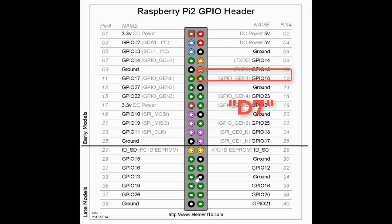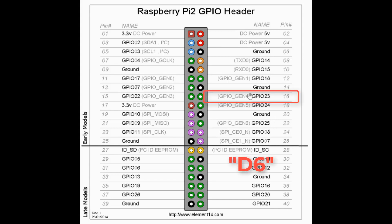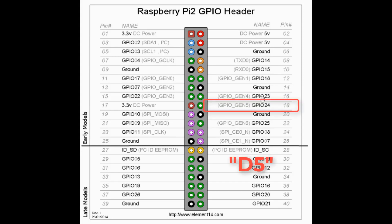Then pin number 14, which is LCD D7, we connect it to GPIO8. If you are looking for it, just count the pins — one, two, three, four, five, six — so GPIO is for LCD_D7. Then LCD_D6 is pin number 23, which is GPIO23, connected to pin number 13 of the LCD. Pin number 12, which is LCD_D5, we connect it to GPIO24.